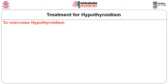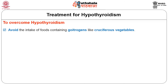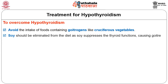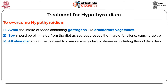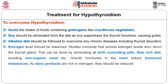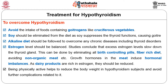Some practical tips to overcome hypothyroidism: avoid the intake of foods containing goitrogens like cruciferous vegetables. Soy should be eliminated from the diet as it suppresses thyroid function and causes goiter. An alkaline diet should be followed to overcome chronic diseases including thyroid disorders. Estrogen levels should be balanced — studies conclude that excess estrogen levels slow down the thyroid gland. This can be done by eliminating birth control pills, following a fiber-rich diet, and avoiding non-organic meat. Dairy products, which are rich in estrogen, should be reduced.